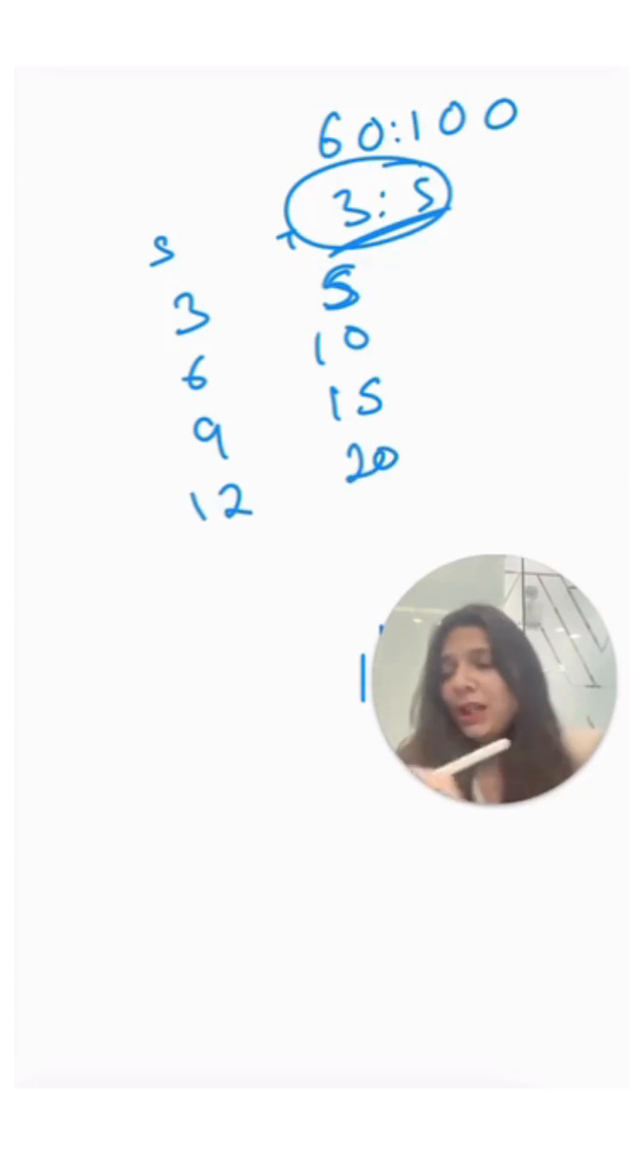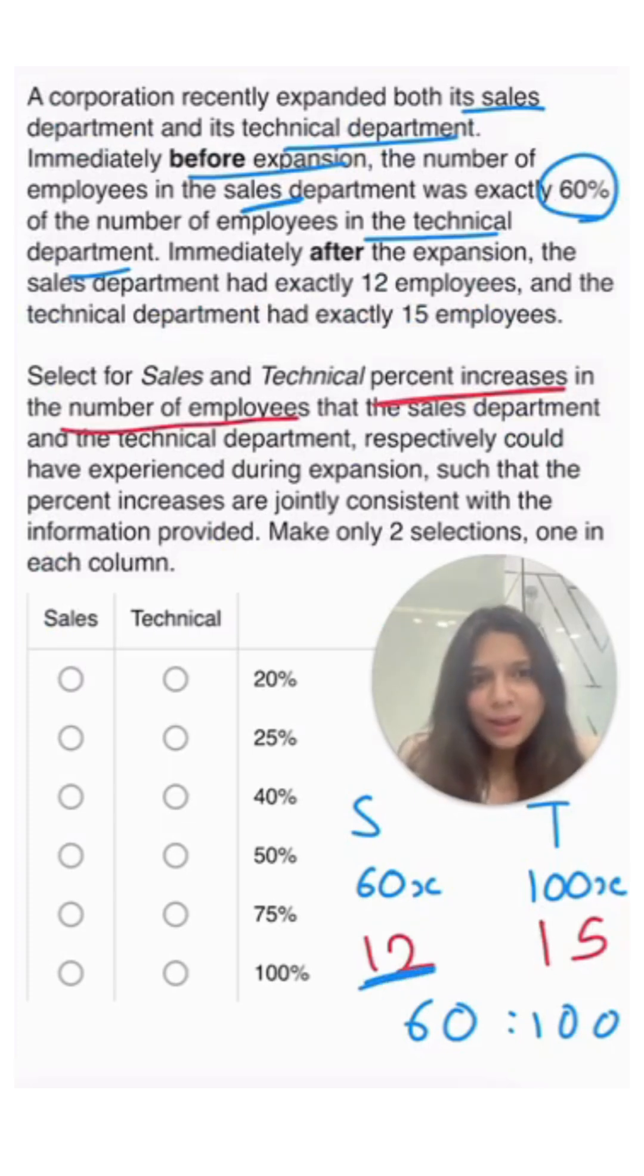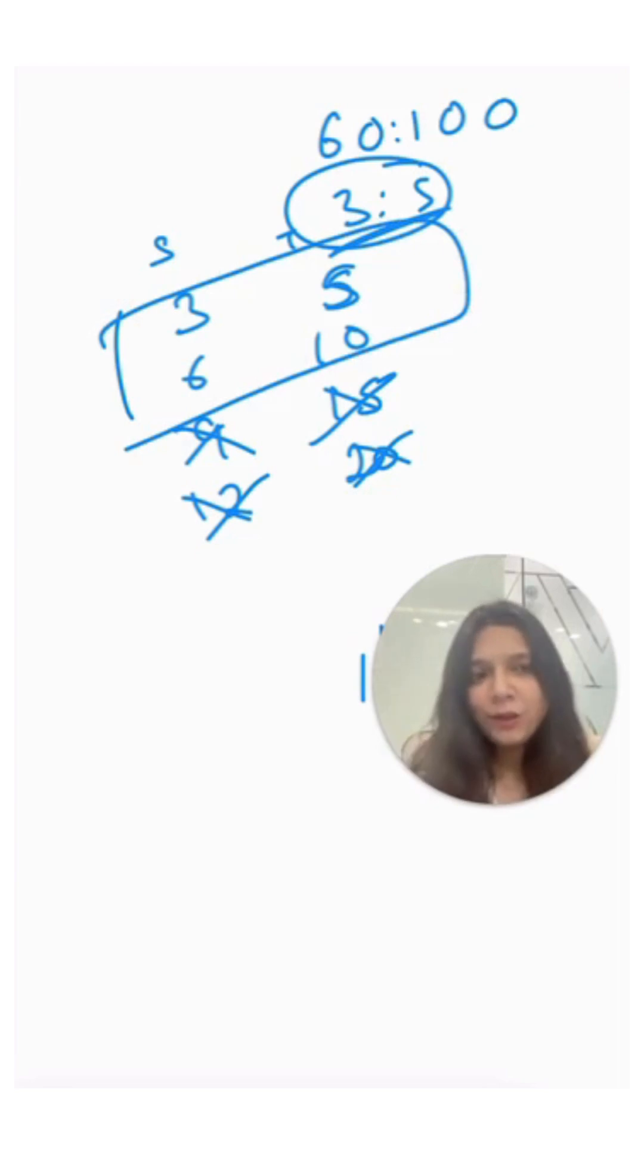But we know that afterwards there were 12 employees in sales and 15 in technical. So before expansion, T cannot be 15. Now we only have two options: either the number of employees were 3 and 5, or 6 and 10.